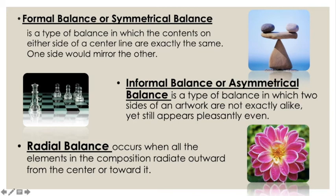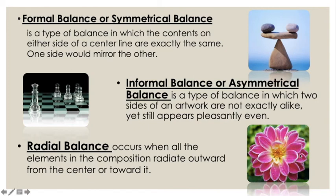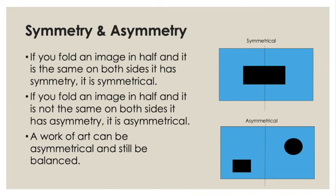Informal or asymmetrical balance is a type of balance where the two sides of an artwork are not exactly alike, yet still appear pleasantly even. For example, in this chess piece image, there are four smaller figures and one taller figure — though asymmetrical, it has visual balance because one is tall while the others are small but many. Then we have radial balance, which occurs when all elements in the composition radiate outward from the center, just like a flower in the picture.